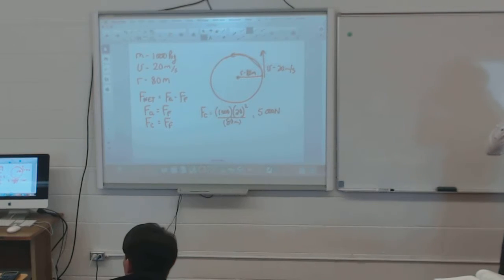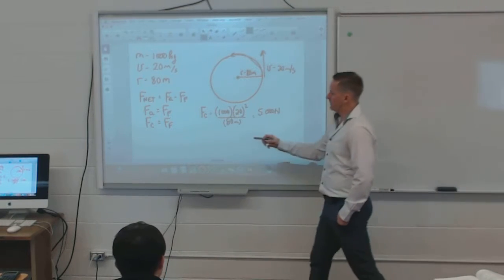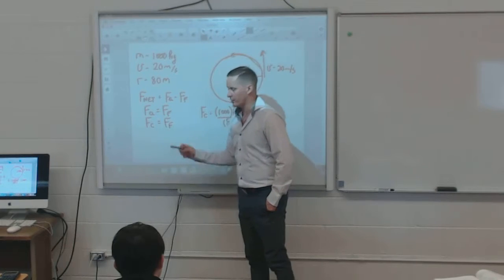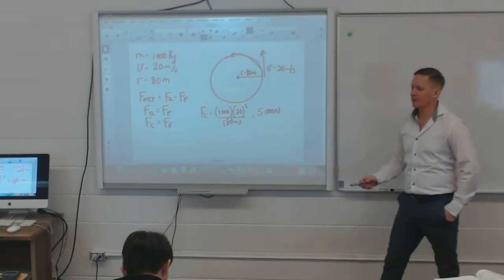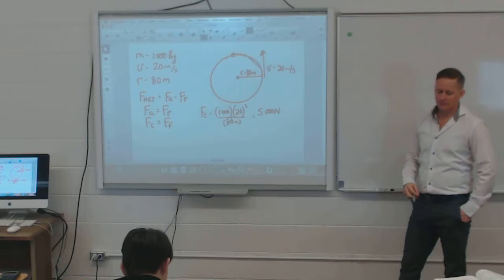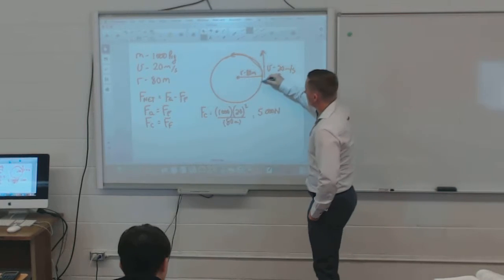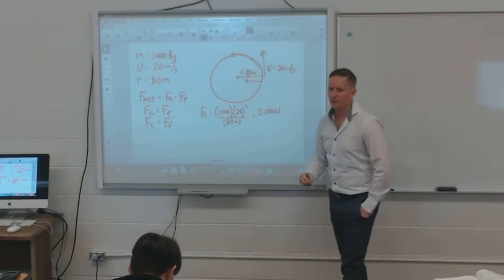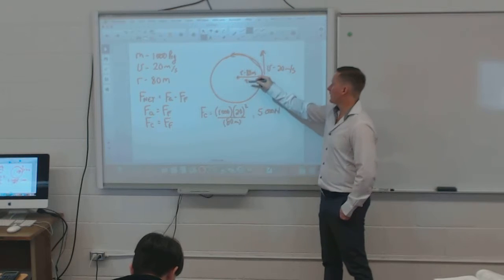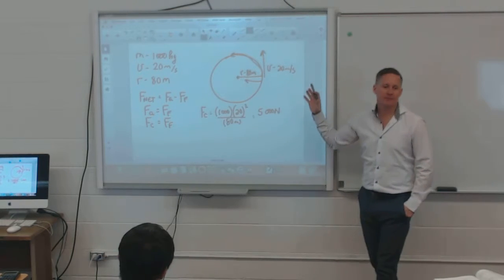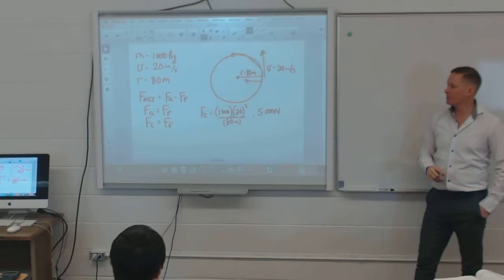It is centripetal force, but it's equal to what the question is asking for — the force of friction, which works in the opposite direction. The centripetal force works towards the middle of the circle, and the force of friction keeps it from sliding away from the center.